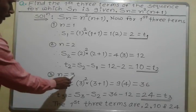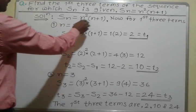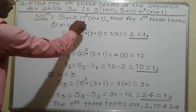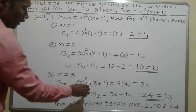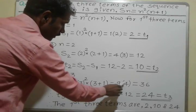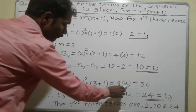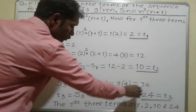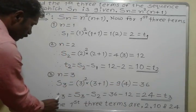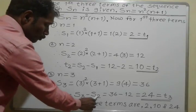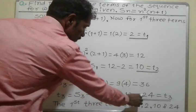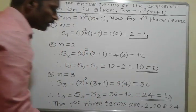Third, n is equal to 3. I will substitute the value of n in Sn. S3 is equal to 3 square into 3 plus 1. 3 square is 9, and 3 plus 1 is 4. Therefore, 9 into 4 is equal to 36. This is the value of S3. The formula for T3 is equal to S3 minus S2, which is 36 minus 12, equal to 24. This is the value of T3.